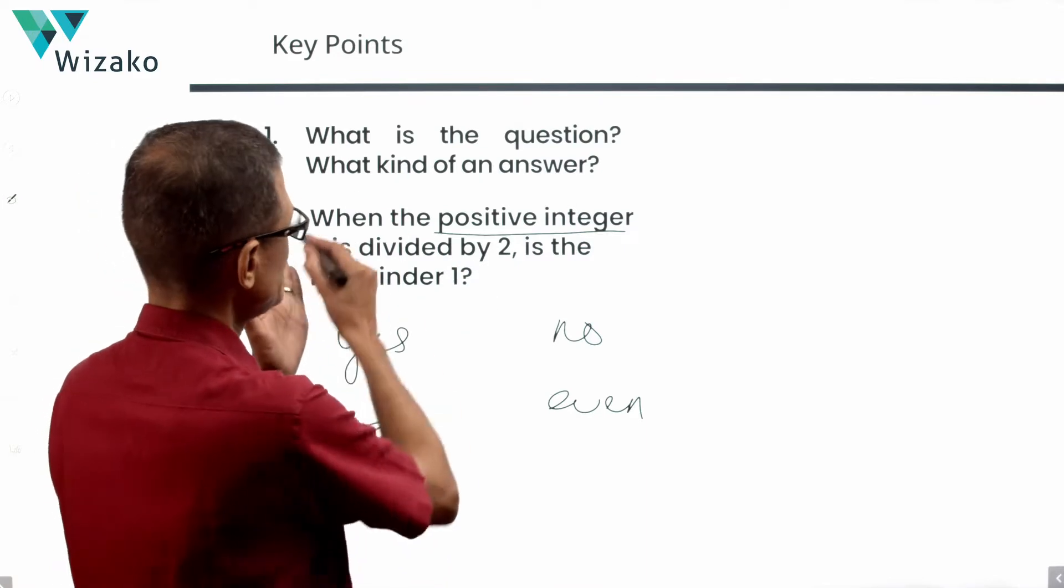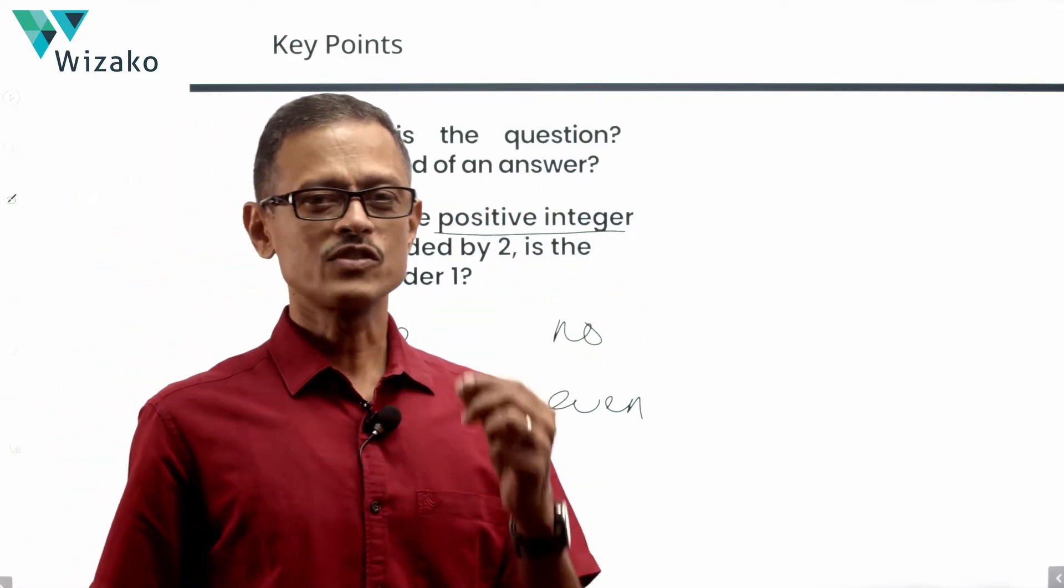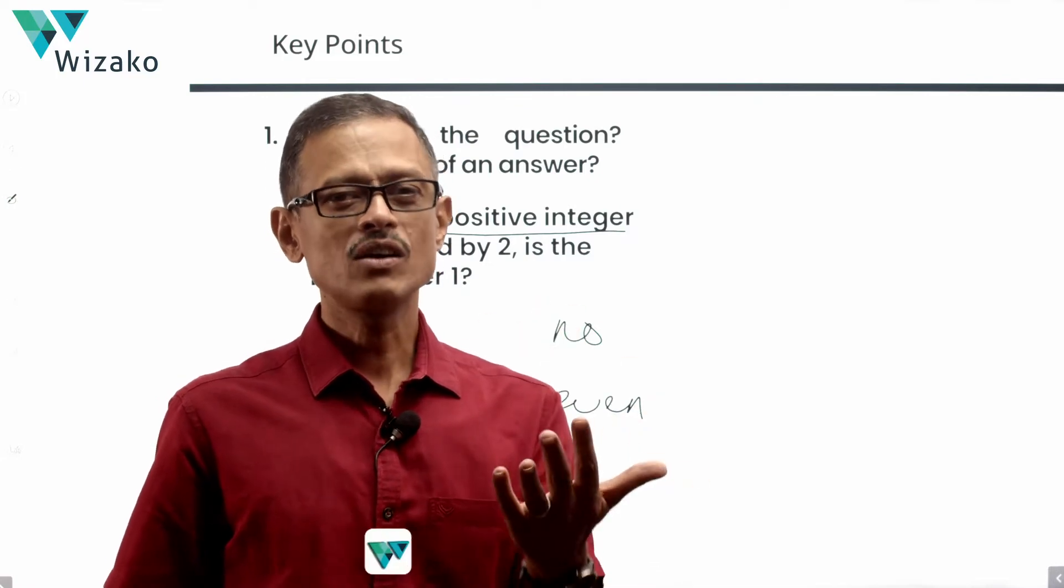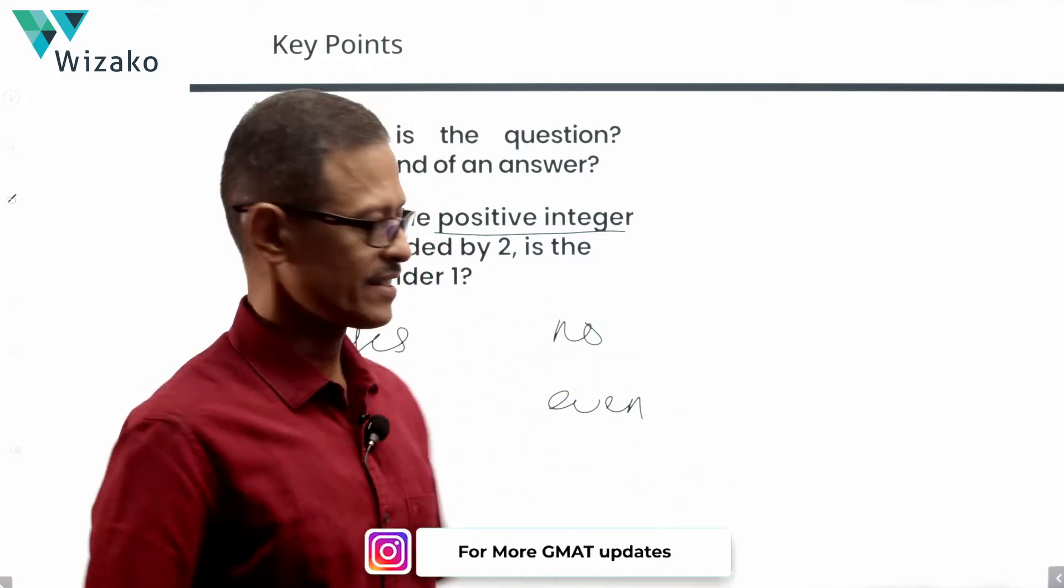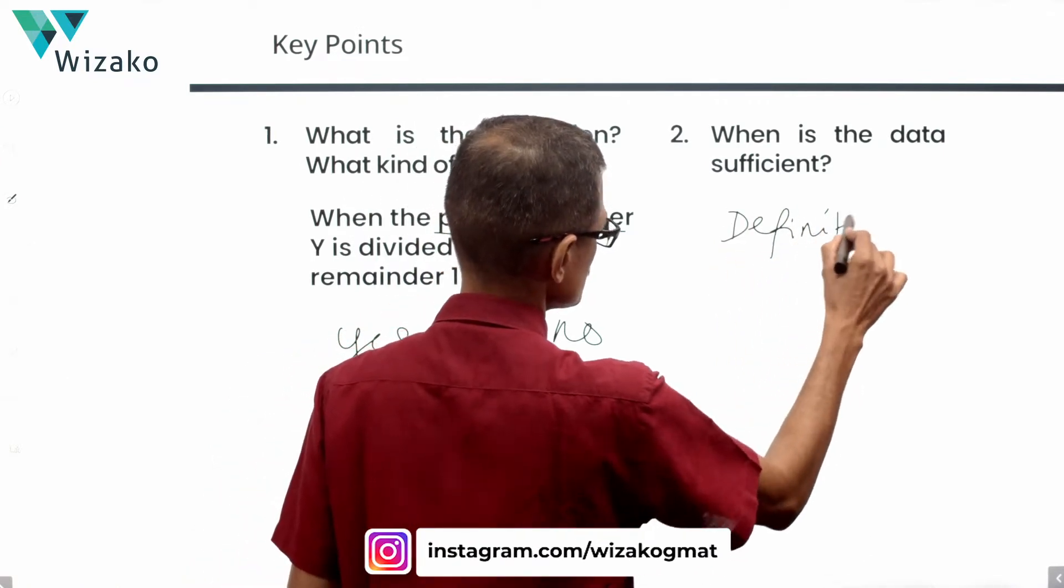So essentially this question, leaving all of these wordy ways in which it's worded, just comes back to saying, is Y odd or is Y even? That's what they're essentially asking. The data is sufficient when we have a definite yes or a definite no.